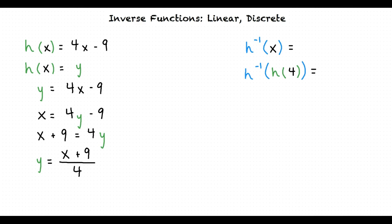Now that we have switched x and y and solved for y, we have found h inverse of x. h⁻¹(x) = (x + 9)/4.